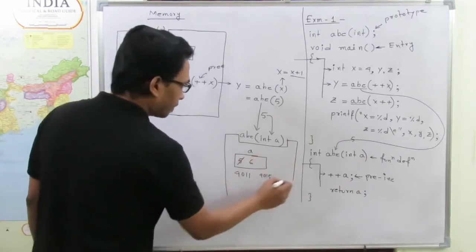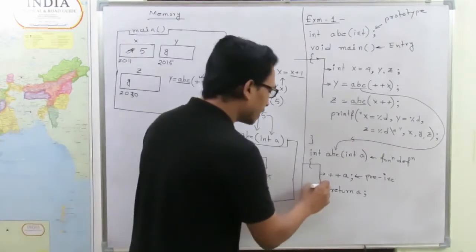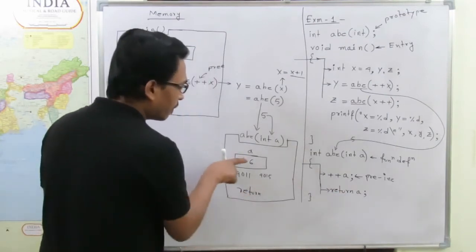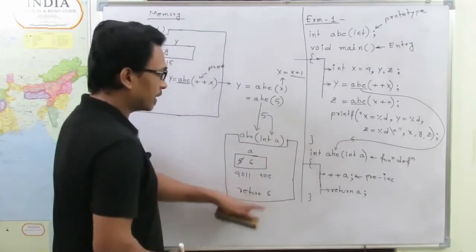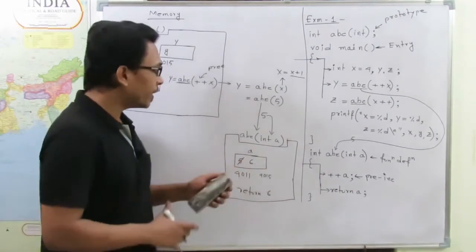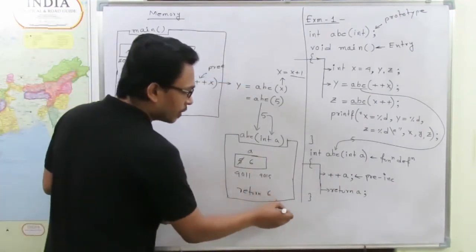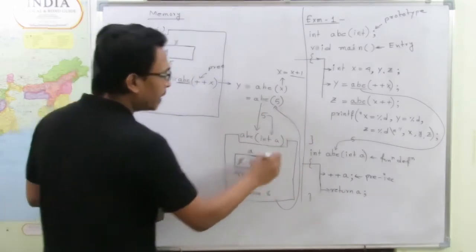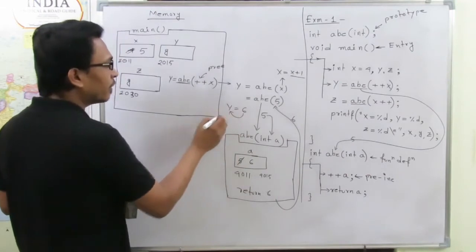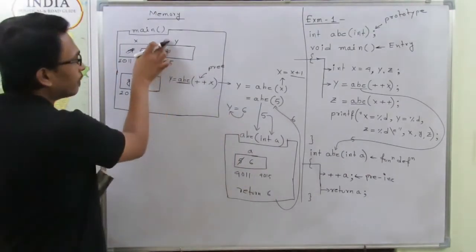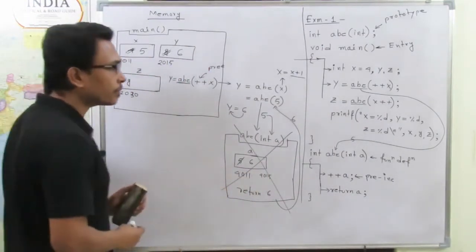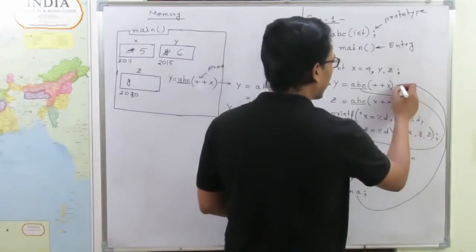The system directly increments the value of a, so a becomes 6. The next instruction is `return a`, so the system returns with the value of a, which is 6. Control returns to the calling position with value 6. The instruction becomes `y = 6`, so y is updated to 6, and the abc memory block is deallocated.